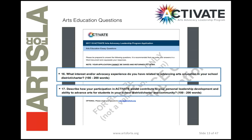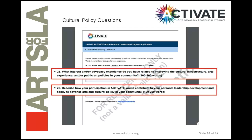The Arts Education application questions have to do with your experience or interest in advocating in the school districts you're affiliated with or have relationships with. The Cultural Policy questions have to do with your experience or interest in advocating in your local community or municipality. That's the main difference between the two applications, in addition to all of the other basic biographical information about yourself as an applicant.